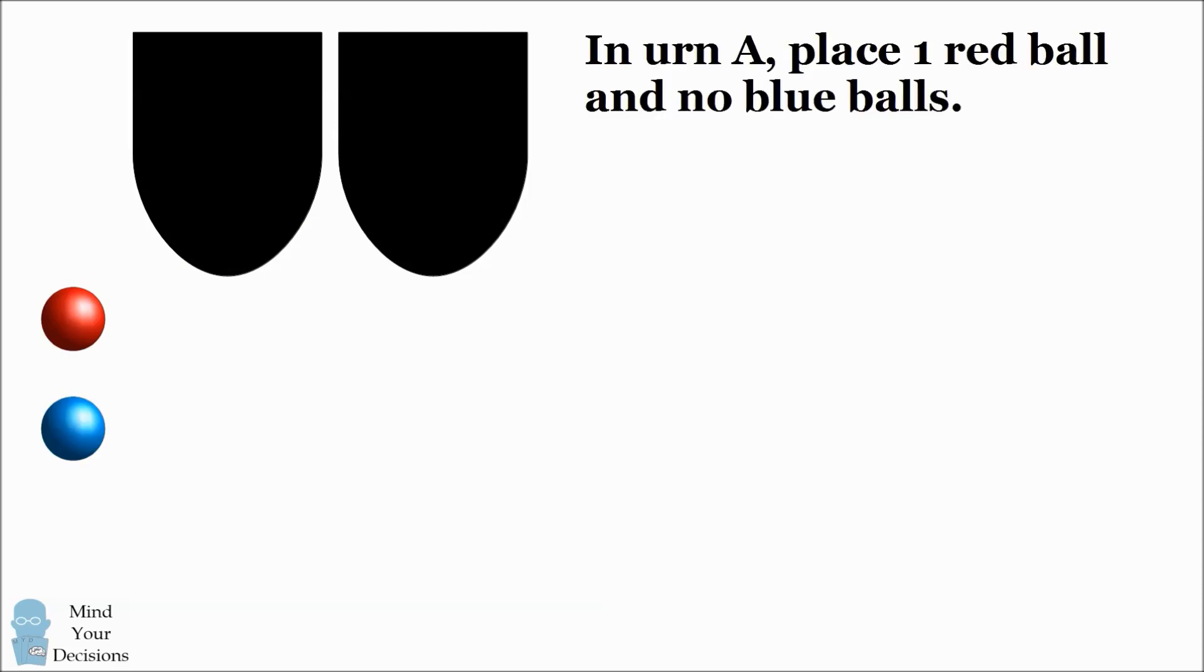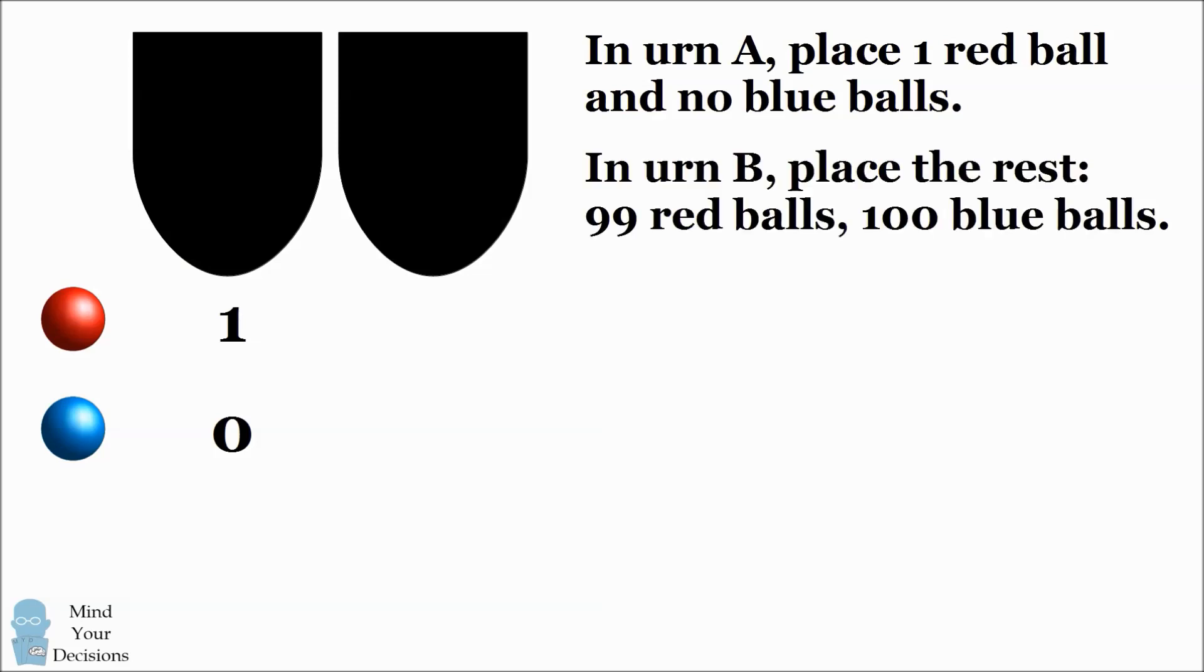So here's the optimal strategy. In one of the urns, you place one red ball and none of the blue balls. In the other urn, you place all of the remaining balls: 99 red balls and 100 blue balls.